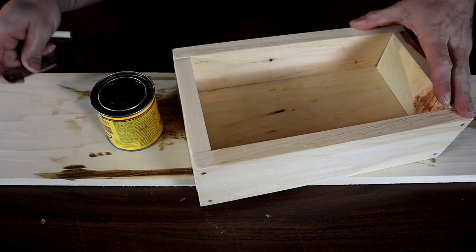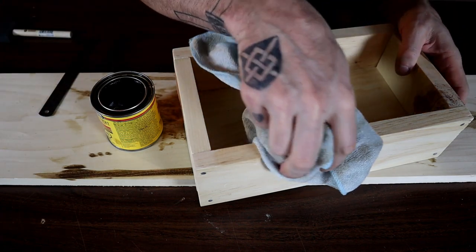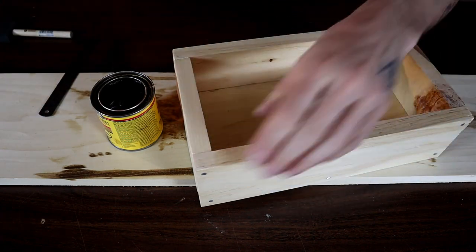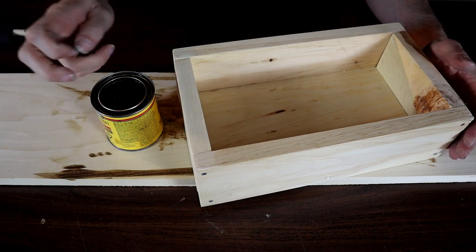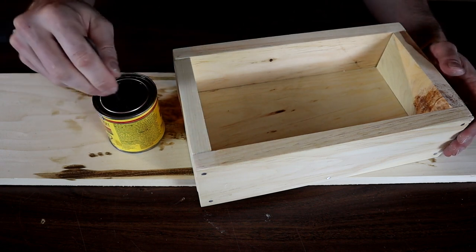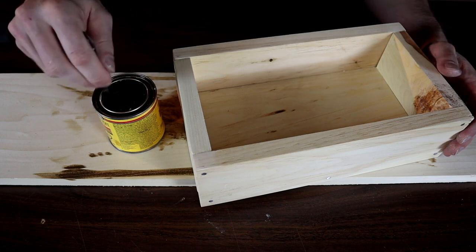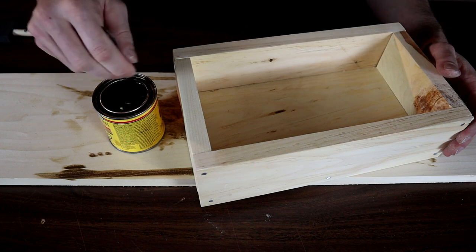I've got my box all sanded. The next thing you're going to want to do before you stain it is to wipe it off with a tack-free cloth just to get all the dust off it. And then remember, very important, never shake your stain. Always stir it. If you shake it, you're going to induce a lot of air bubbles into it and you don't want that. We'll stir this up really well. Then we'll start applying it.